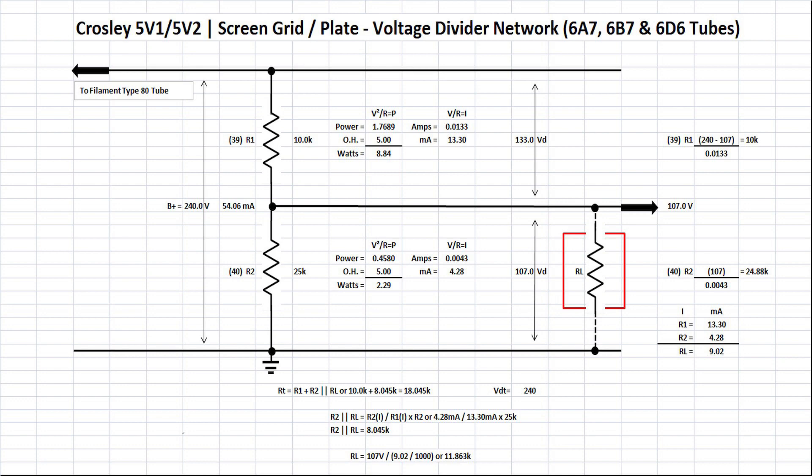If you look at the first section of the voltage divider, R1, you can see I've got the current called out. Taking voltage divided by resistance, that gives us just north of 13 milliamps. Off to the far right you can see the calculations. We'll take the 240 volt input minus the 107, divide that by the current, and you can see that comes back to a 10k resistor which we have in place.